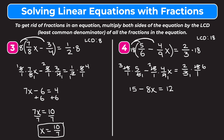Now we're going to solve. We start by subtracting 15 from both sides. On the left we're left with negative 8x — don't drop that negative, some students do that. On the right, 12 minus 15 is negative 3. Finally, divide both sides by negative 8. On the left we're left with x. On the right, negative 3 divided by negative 8 gives us positive 3/8.